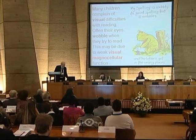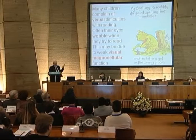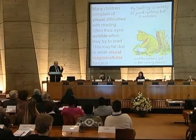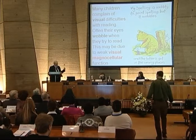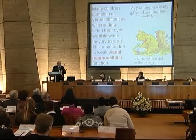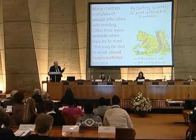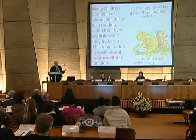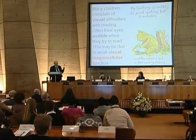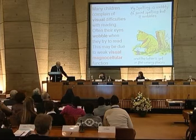My starting point was studying children who complained that letters and words wobbled when they tried to read. As a trained clinical neurologist, this reminded me of patients I'd seen with cerebellar problems. Many children were complaining of mild versions of the sort of symptoms that people with severe cerebellar problems suffered from, so I thought they may have a cerebellar problem. I'd also studied a system called the visual magnocellular system, and my colleague Mitch Glickstein and I were the first to show that the visual magnocellular system goes from the visual cortex to the cerebellum.